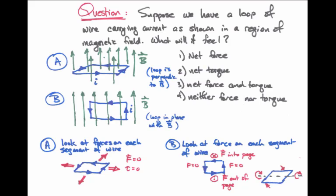This means that although the net force on this object is zero, there is a net torque. It's trying to make the loop of wire spin.